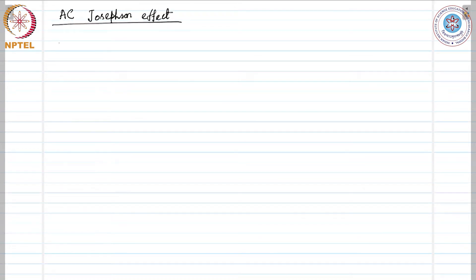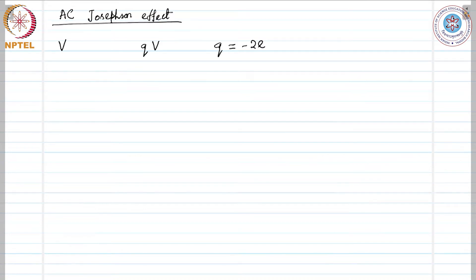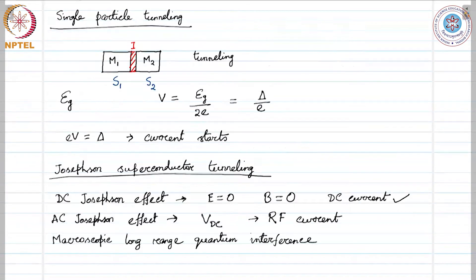Let a DC voltage V be applied across the junction. We can do this because the junction is an insulator — across that insulator we can apply a voltage with no problem. An electron pair experiences a potential energy difference; the energy difference would be Q·V, where Q is minus twice e, where e is the charge of a proton. A pair on one side is at potential energy minus e·V and the other side is at plus e·V.